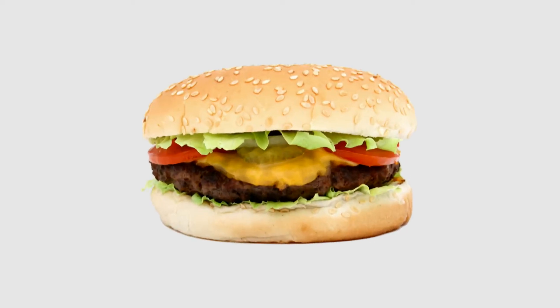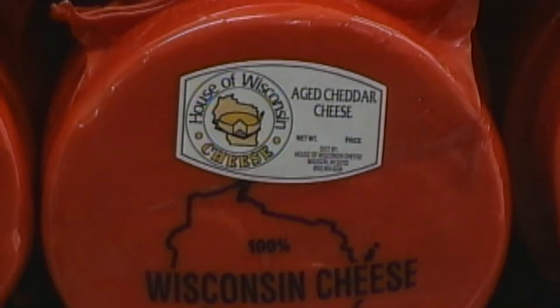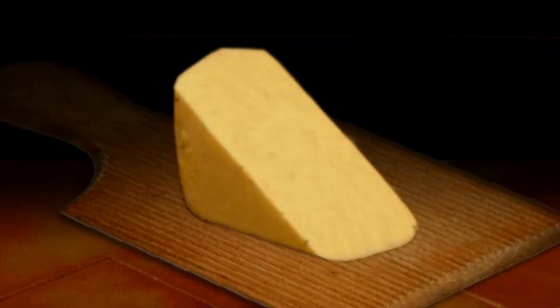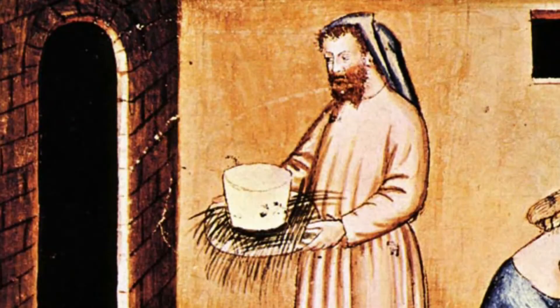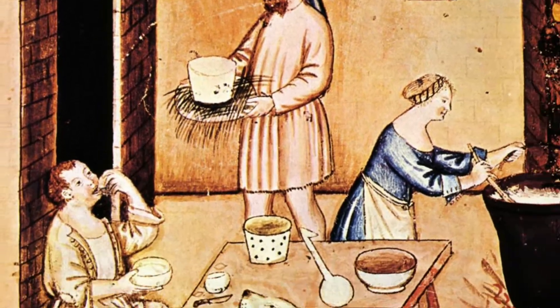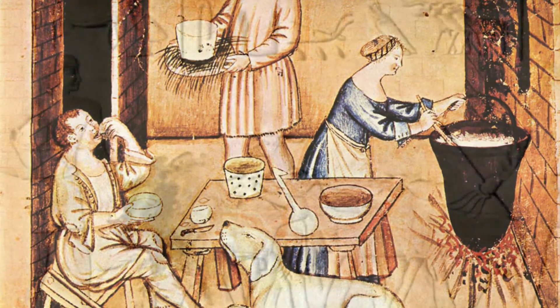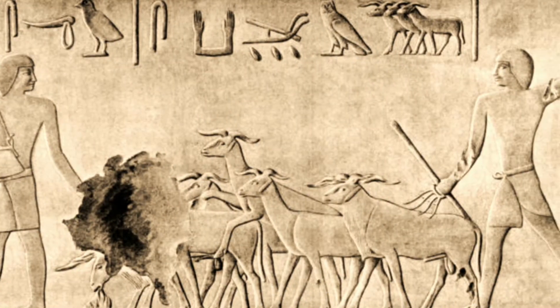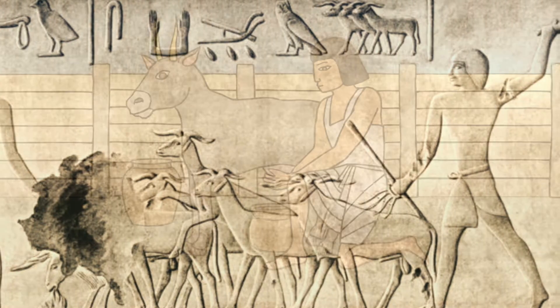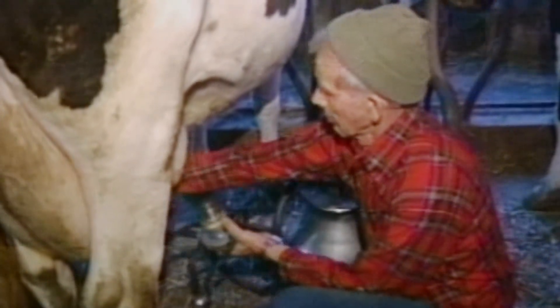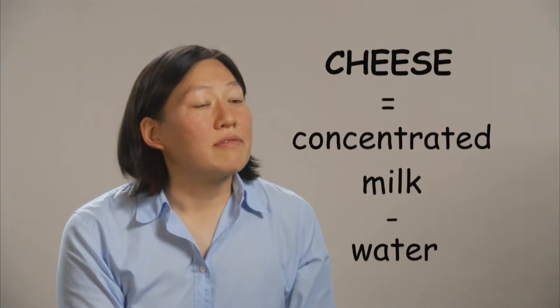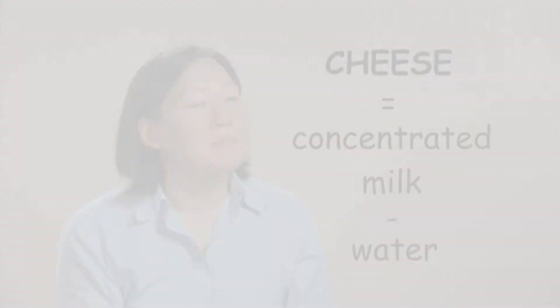You can't have a cheeseburger without it — cheese: cheddar, Swiss, mozzarella, blue, Monterey Jack, pepper jack. To keep the chemistry more basic, we won't deal with American or processed cheese. Cheese is an ancient food dating back some 4,000 years, to when humans first domesticated goats, sheep, yaks, and other mammals for meat and milk.